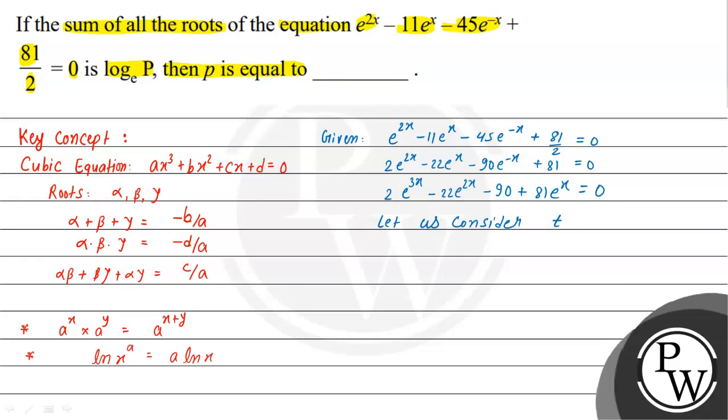Now let's make a substitution. Let t = e^x. Then this equation becomes 2t³ - 22t² + 81t - 90 = 0.